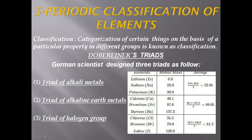Let's start from Dobereiner's triads. Triad means a group of three elements. Dobereiner, a German scientist, classified different elements during 1820. He designed three triads: a triad of alkali metals, a triad of alkaline earth metals, and a triad of halogen metals.